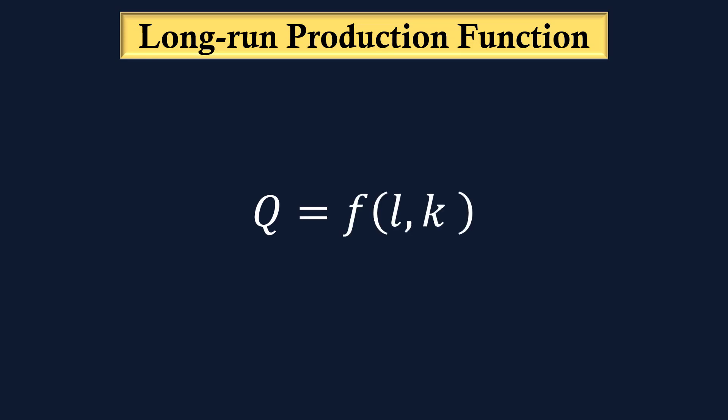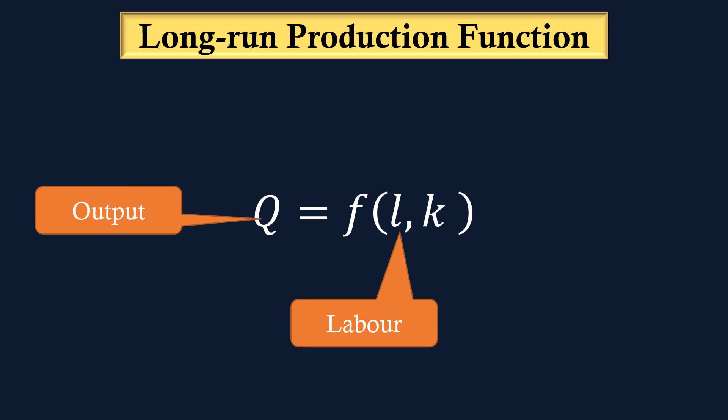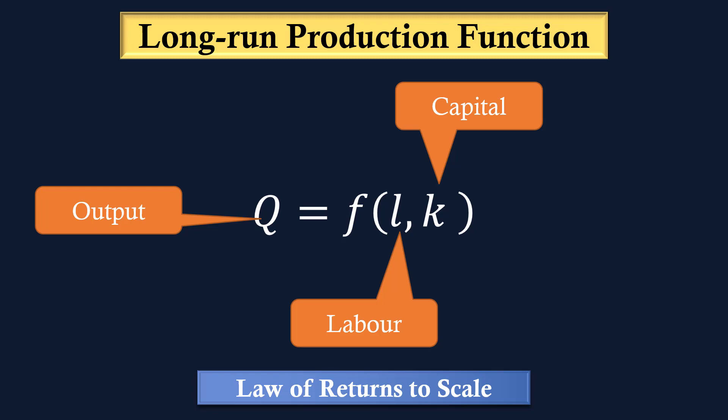Long-run production function is represented as Q is a function of L and K, where Q represents output, L labour, K capital, and the absence of overbar says that all inputs are variable in the long run. The Law of Returns to Scale describes this function.